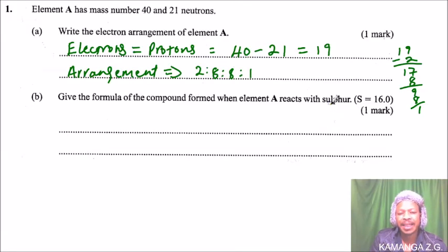We only have 1 electron that is remaining, so that is the electronic arrangement of element A. Remember the diagram that you are drawing showing the electrons: the first one you have 2, the second one has 8. These are the ones that we are referring to as orbital levels. Part B of the question: give the formula of the compound formed when element A reacts with sulfur, S equals 16.